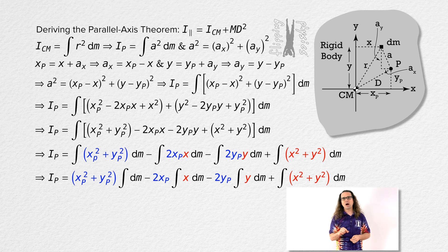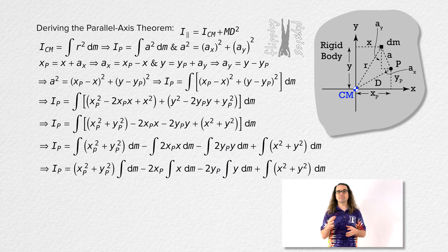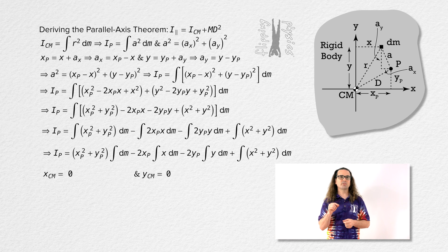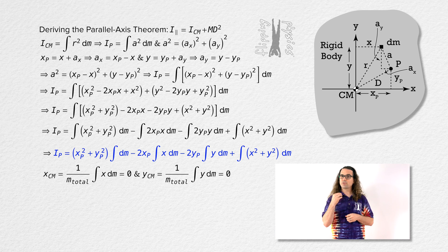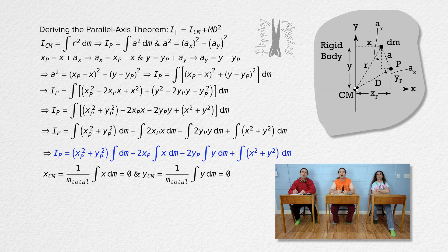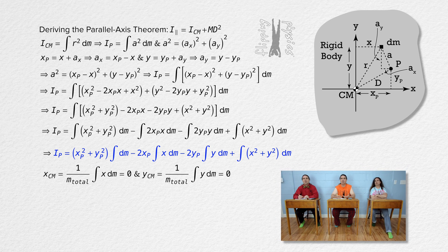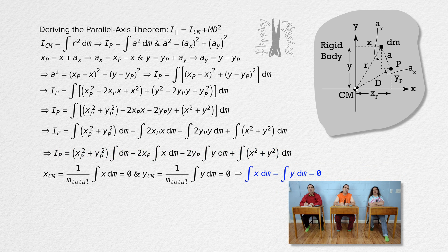Remember that the x and y centers of mass of our object are located at the origin. Therefore, both the x and y centers of mass of the object equal zero. The equation for each is: position of the center of mass equals one over the total mass times the integral of position with respect to mass. Since both position centers of mass equal zero, the integral of position with respect to mass equals zero. Therefore, both of the middle terms in our equation equal zero.